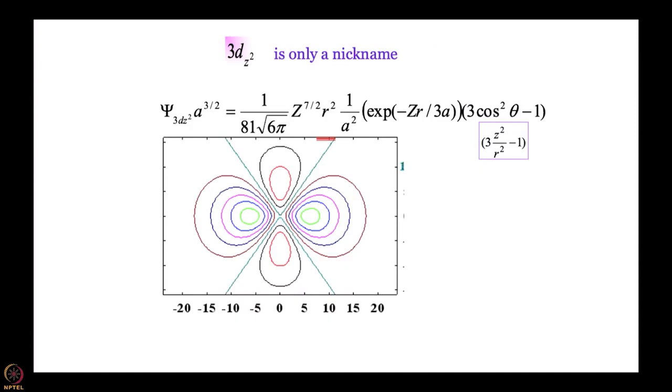To conclude this discussion, let me say that 3d z² is actually a nickname, because the way we have written it here, we have not really converted completely to cartesian coordinates. z²/r² is there, so if we want to convert completely to cartesian coordinates, we should remember that r² is x² + y² + z². When you substitute that and equate to 0, we get 2z² - x² - y² equal to 0. The full name of 3d z² is really 3d 2z²-x²-y². This comes handy when you try to discuss things like d orbital splitting in an octahedral field or whatever field it is, using symmetry, using what are called character tables.